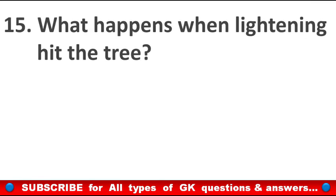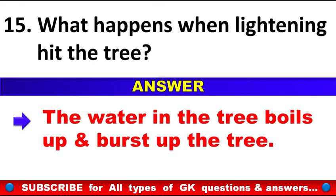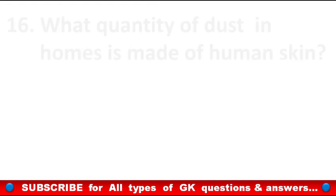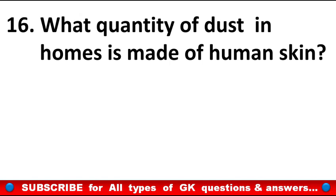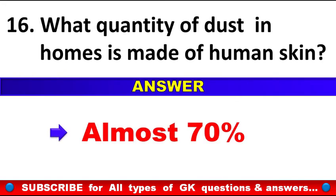What happens when lightning hits a tree? Answer: The water in the tree boils up and bursts the tree. What quantity of dust in homes is made of human skin? Answer: Almost 70%.